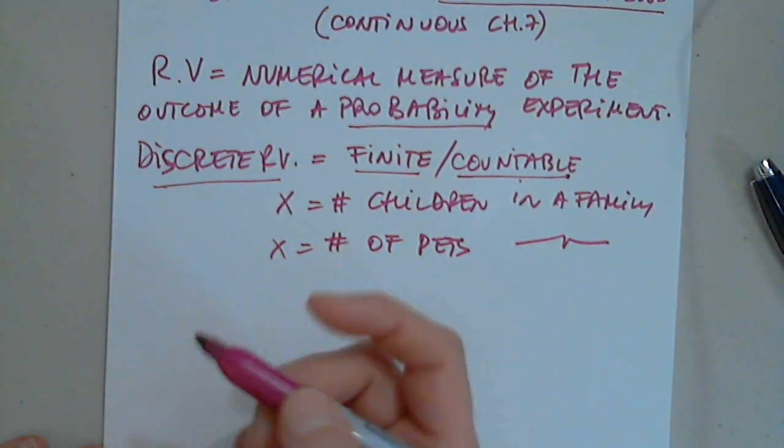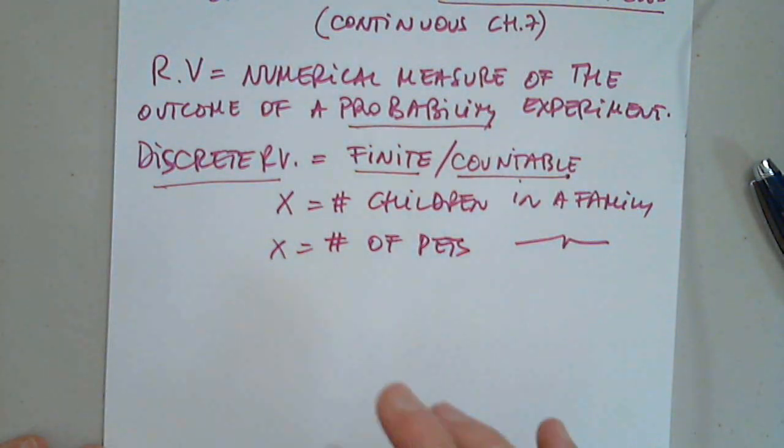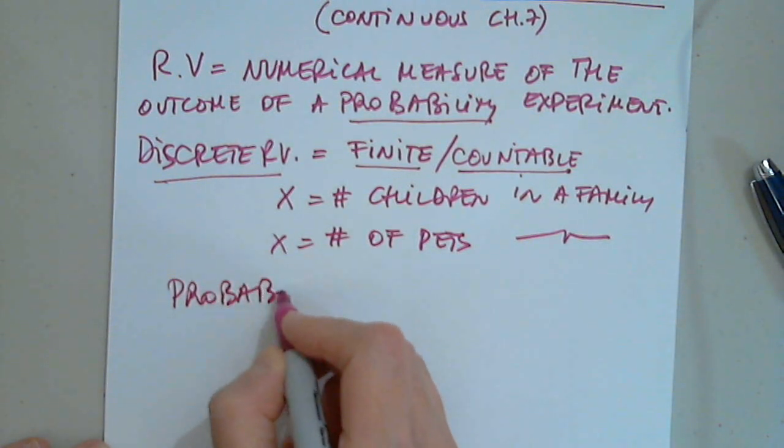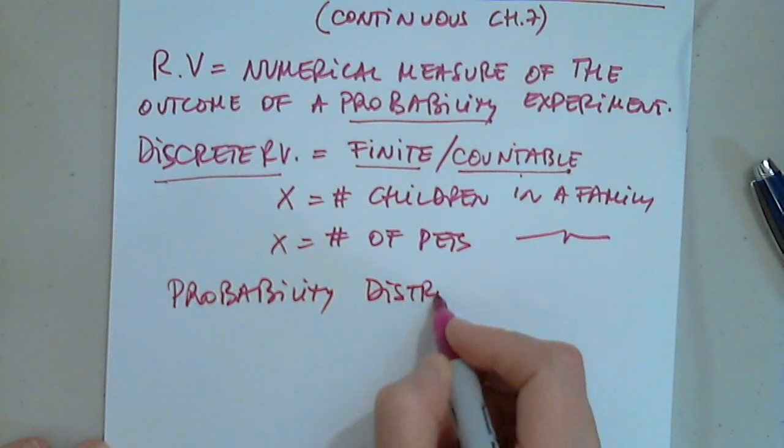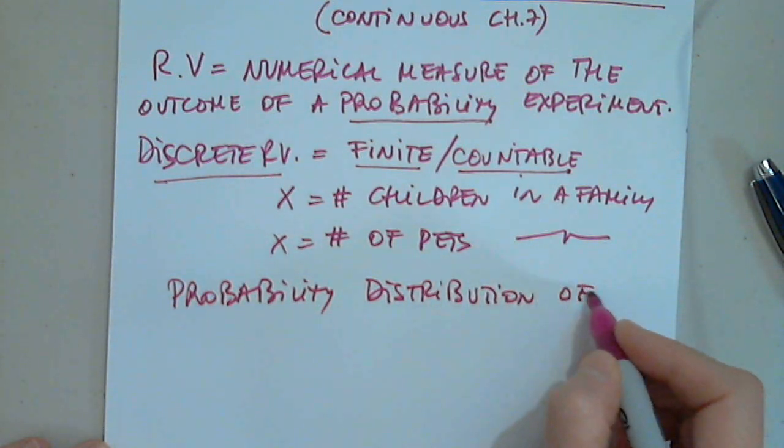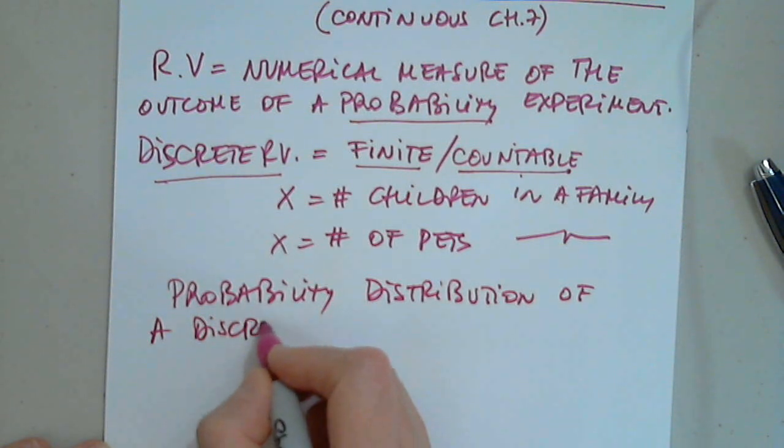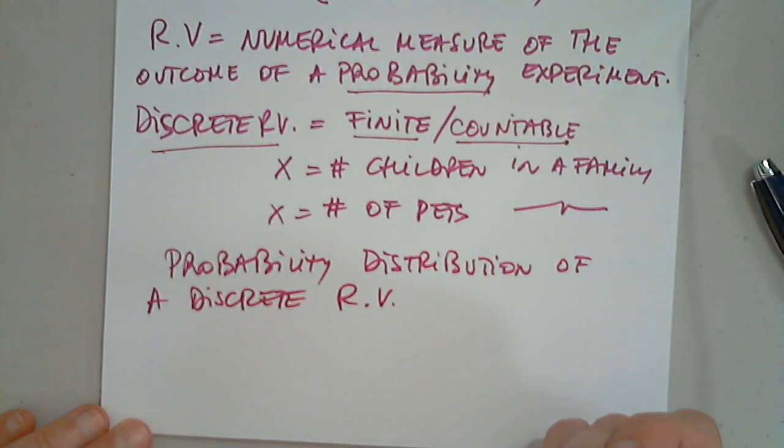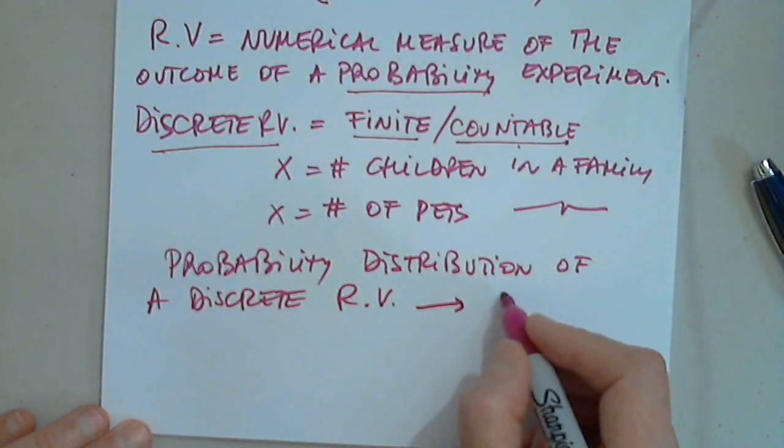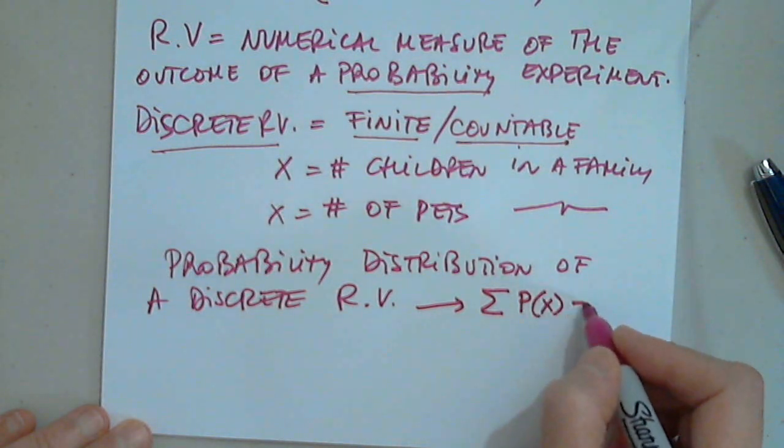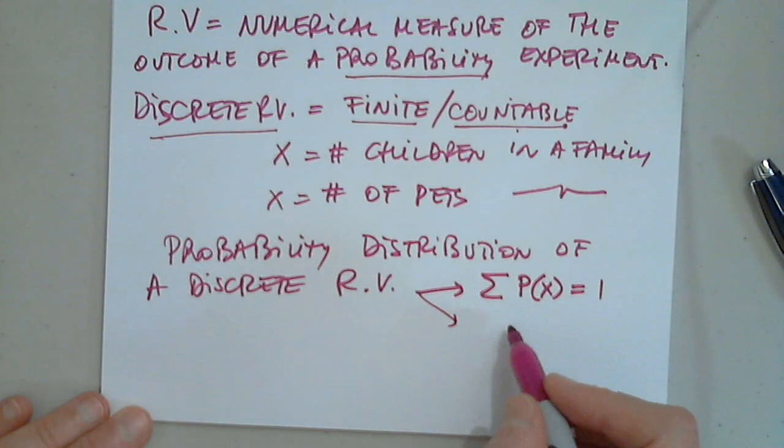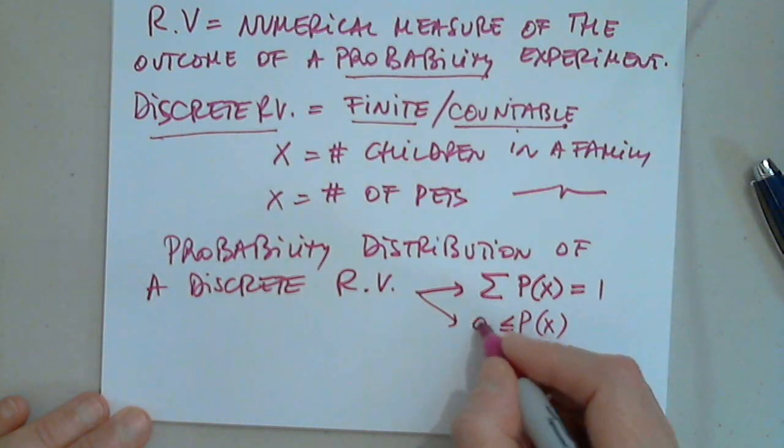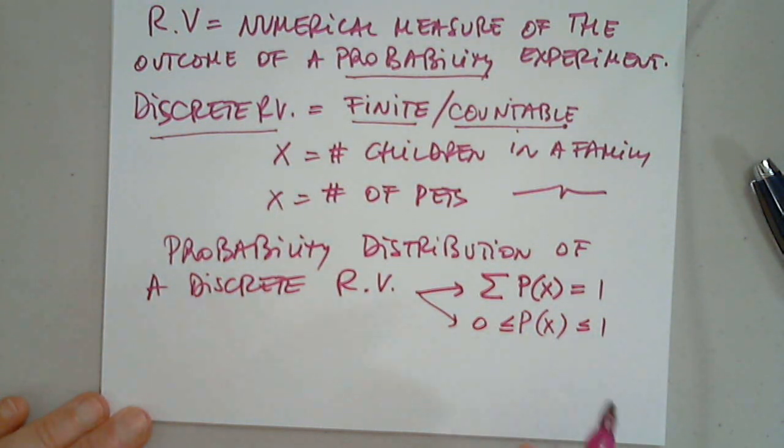Now, a discrete random variable, like a continuous, but that's for chapter 7, they have what is called the probability distribution of a discrete random variable. What does that mean? Well, of course, the same characteristics like before. The sum of all the probabilities has to be one. All probabilities for any random variable, discrete or continuous, still has to be between negative. The probability has to be between zero and one.